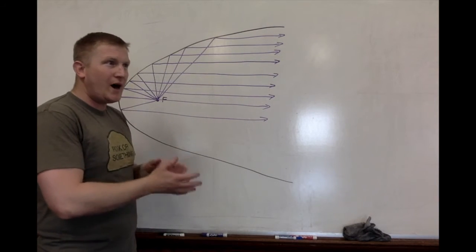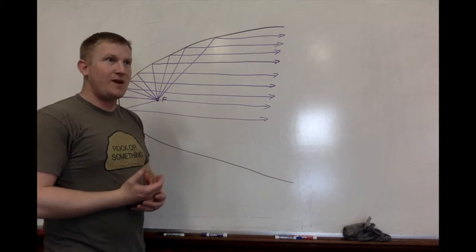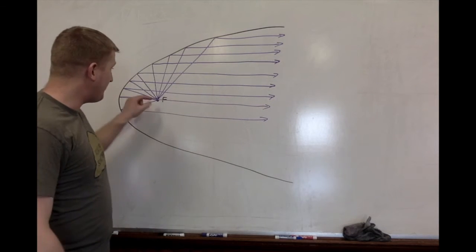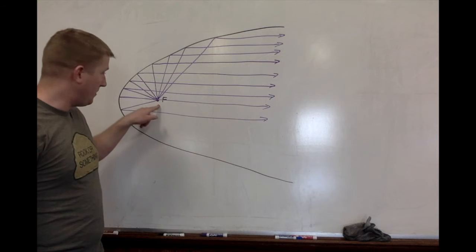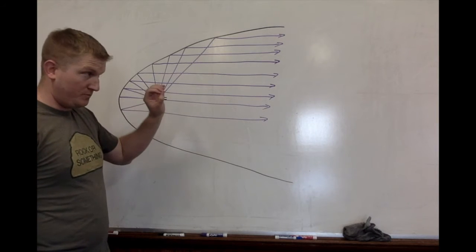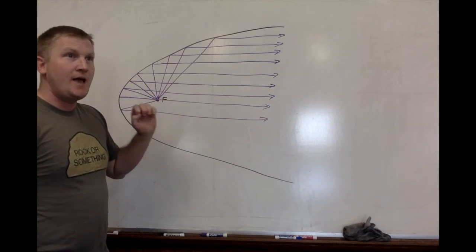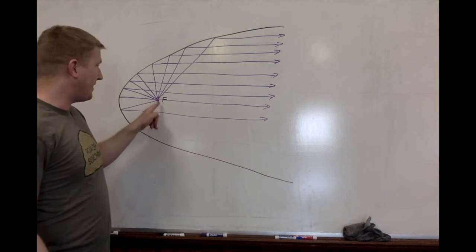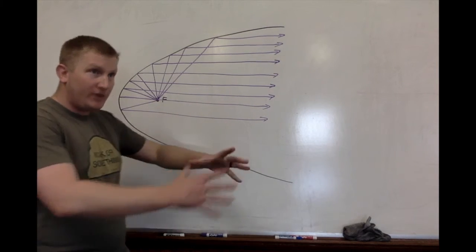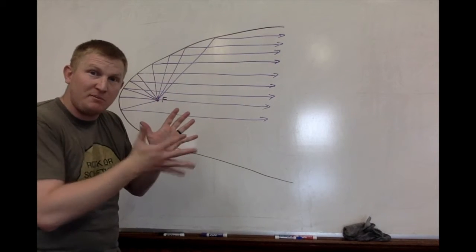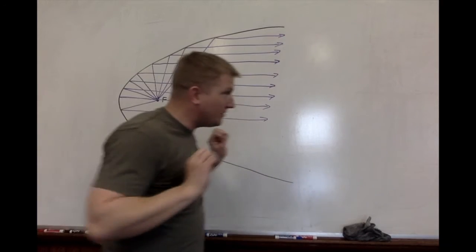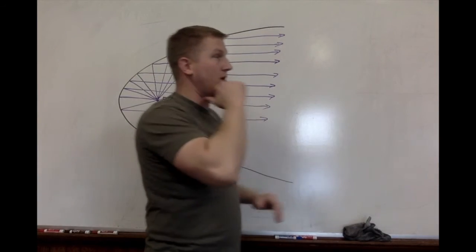Knowing this property is why flashlights are shaped the way they are. This is a brilliant design. If you put the light bulb approximately in the position of the focus point, that means no light is wasted. Every light that comes out of this light bulb is bouncing off of that reflective paraboloid, which is in the flashlight, and going out towards that other focus point.